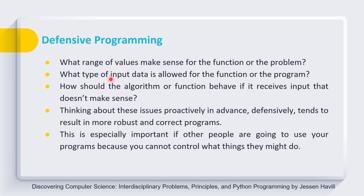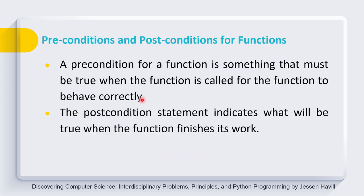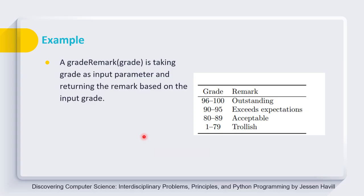In defensive programming, we define and implement preconditions that are required for our function to perform properly. Once these preconditions are achieved, our function should guarantee the post condition — it simply states what will be true when the function finishes its work. Let us consider an example to understand this concept further.